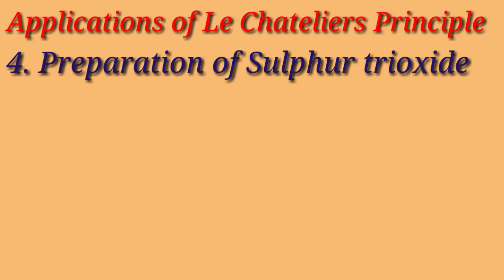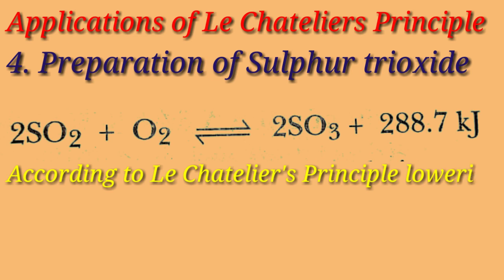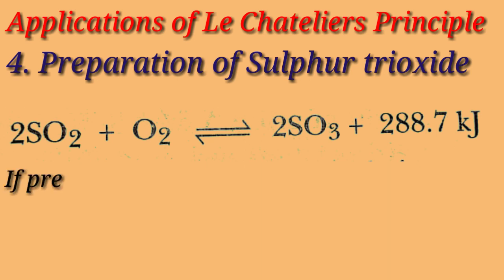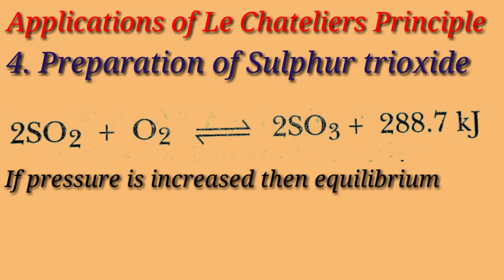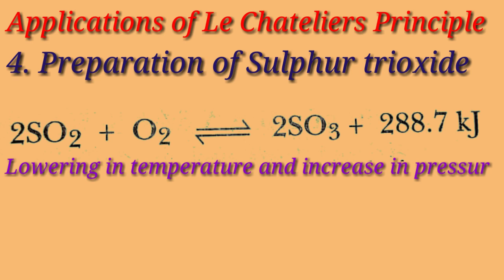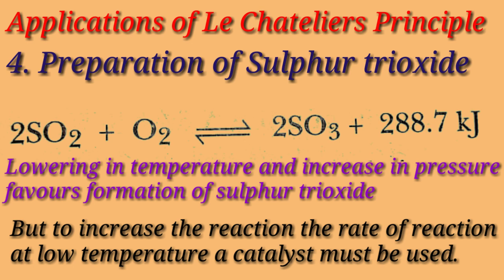Next is the preparation of sulfur trioxide. This reaction is exothermic. We know that decrease in temperature favors the exothermic reaction — if we decrease the temperature, more and more sulfur trioxide is formed. If we increase the pressure, the equilibrium will shift towards the lesser number of molecules, that is towards the right side. So, lowering the temperature and increasing the pressure favors the formation of sulfur trioxide. But to increase the rate of reaction at low temperature, a catalyst must be used.